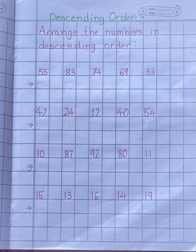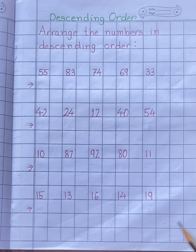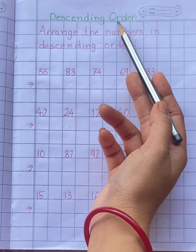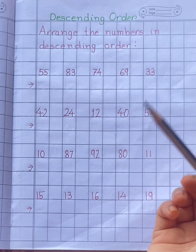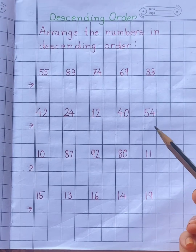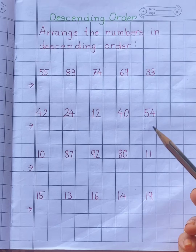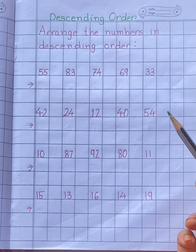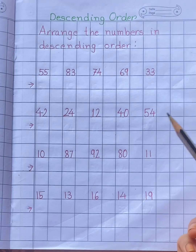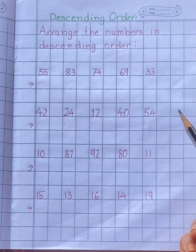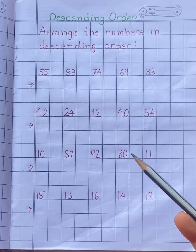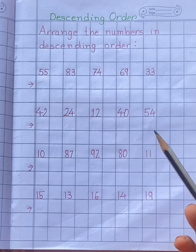Hello, my dear children. Today in mathematics we are going to revise descending order. In the previous video, we have learnt about descending order. What do you mean by descending order? Descending order means arranging numbers from big to small. In descending order, the numbers always keep decreasing.